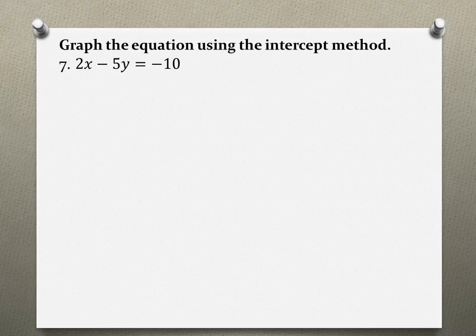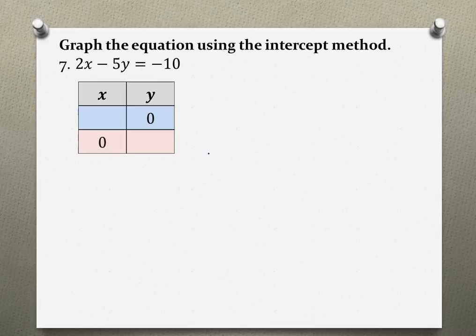Graph the equation using the intercept method, problem number 7: 2x minus 5y equals negative 10. So if we're looking for intercepts and we're supposed to use the intercept method, we're basically plugging in zeros. I made myself a little table, and these are coordinates - I have my x-coordinate and my y-coordinate, and I already plugged in zeros.